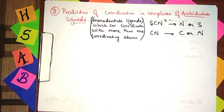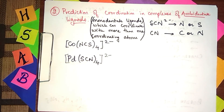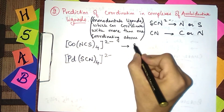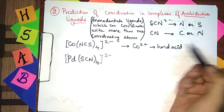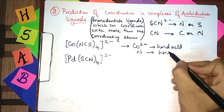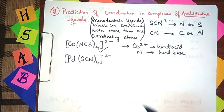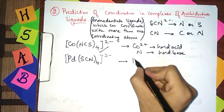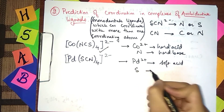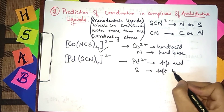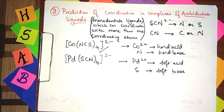We can now predict which atom of the ambidentate ligand will coordinate, using Pearson's principle. For example, cobalt (Co²⁺) is a hard acid, and nitrogen is a hard base donor atom — so Co²⁺ coordinates through nitrogen (N-bonded thiocyanate), giving a stable complex. For palladium (Pd²⁺), which is a soft acid, sulfur is a soft base donor atom — so Pd²⁺ coordinates through sulfur (S-bonded thiocyanate), also giving a stable complex.